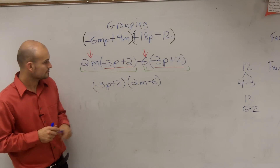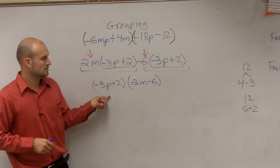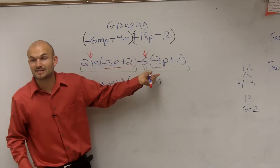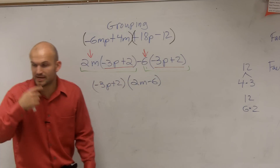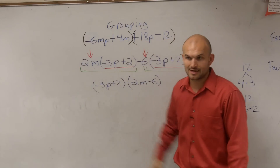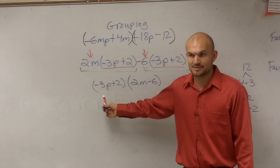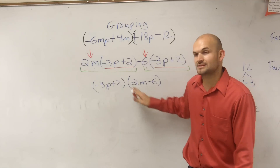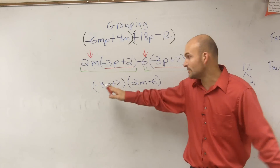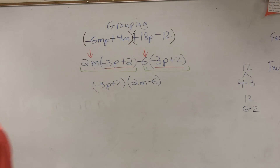Where do you get the 2m minus 6? That's what's left over. When you factor out a negative 3p plus 2, you're left with a 2m minus 6. Now let's go back to that problem — what if we just factored out a 2? Would we be left with the same answer? No, it's going to be different. So this is a way to factor it by grouping into two terms. Are we multiplying two numbers that multiply together? Yes. So this is what we call factoring by grouping.